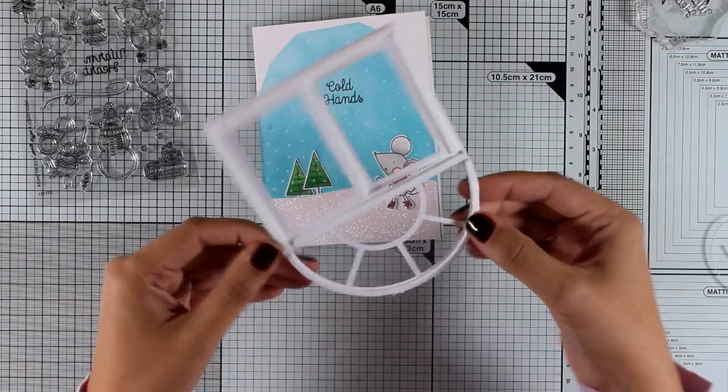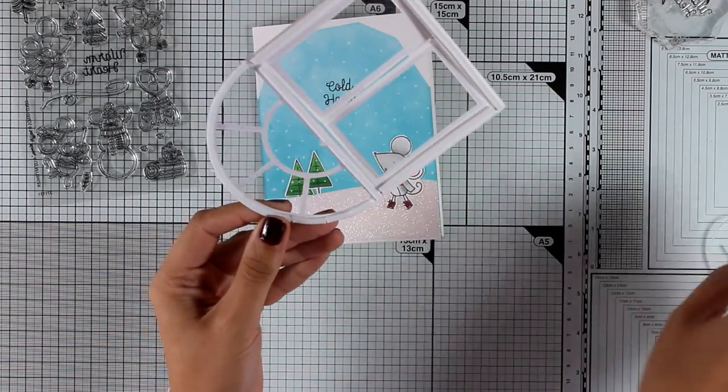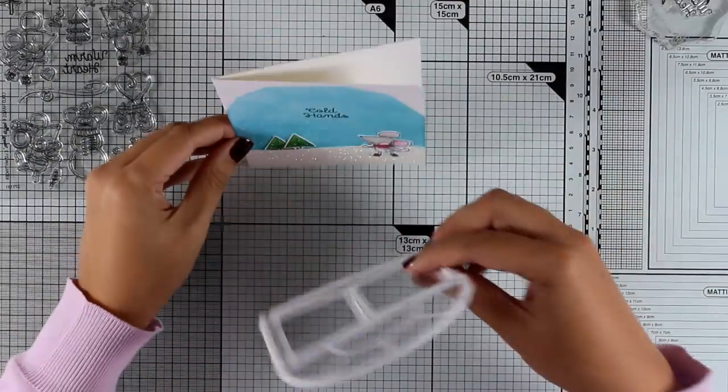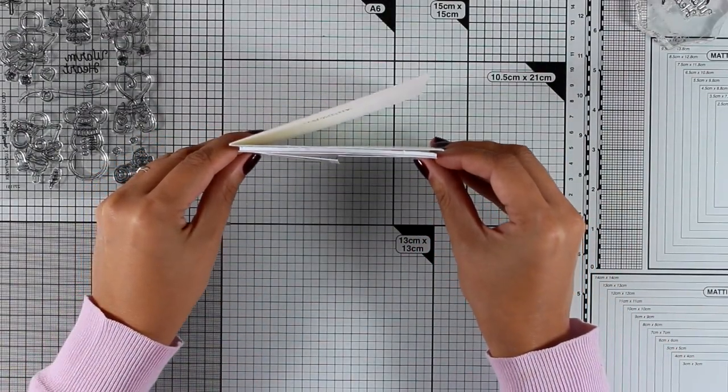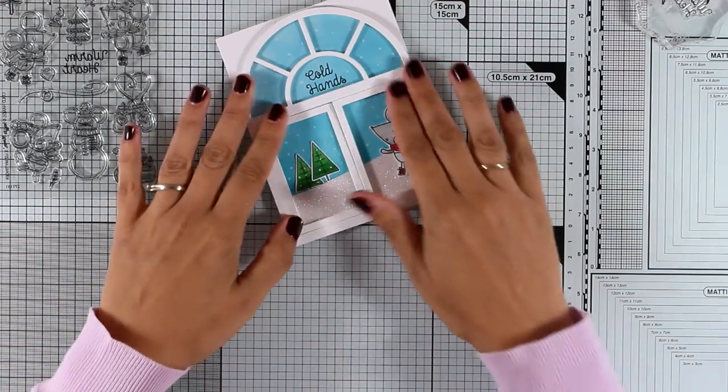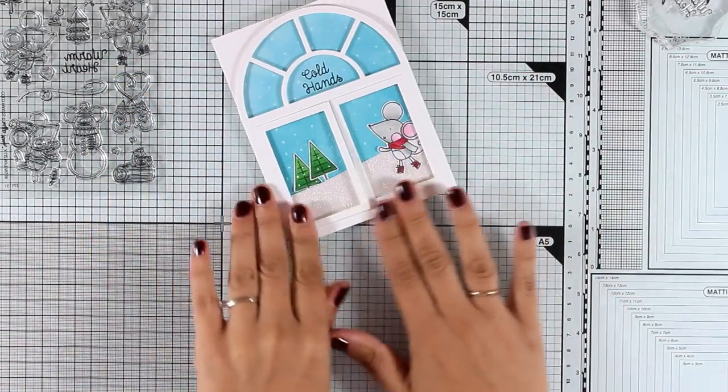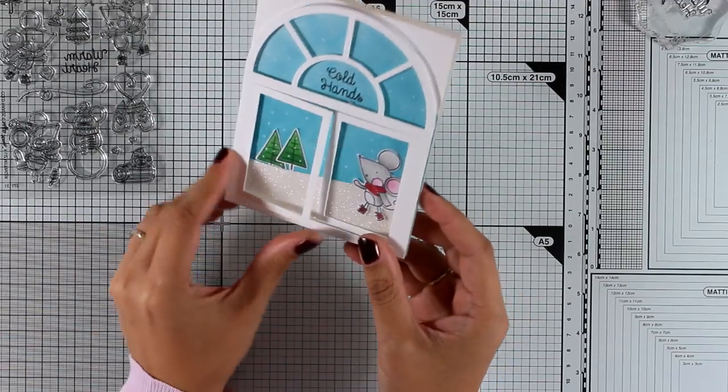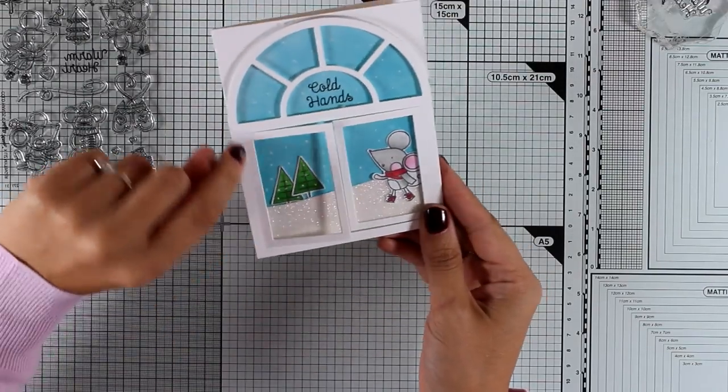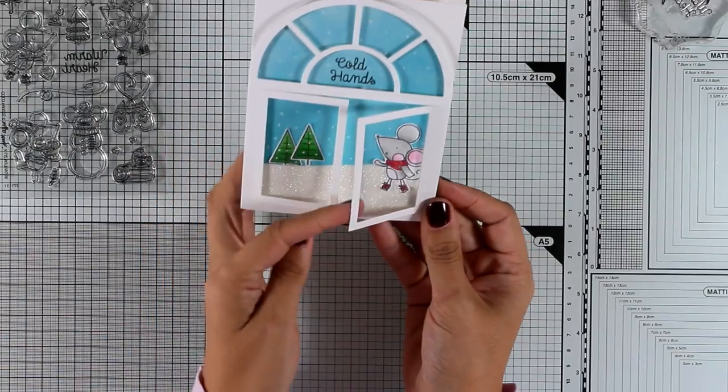At the back of my frame, I have added some foam tape so that is going to be a little bit raised, and I'm going to stick that on top of my card base. That is going to finish off my card for today. Remember that if you want to add sequins or glitter at the back to be your snow, you need to make sure that the windows do not open, so you need to seal them somehow at the back.